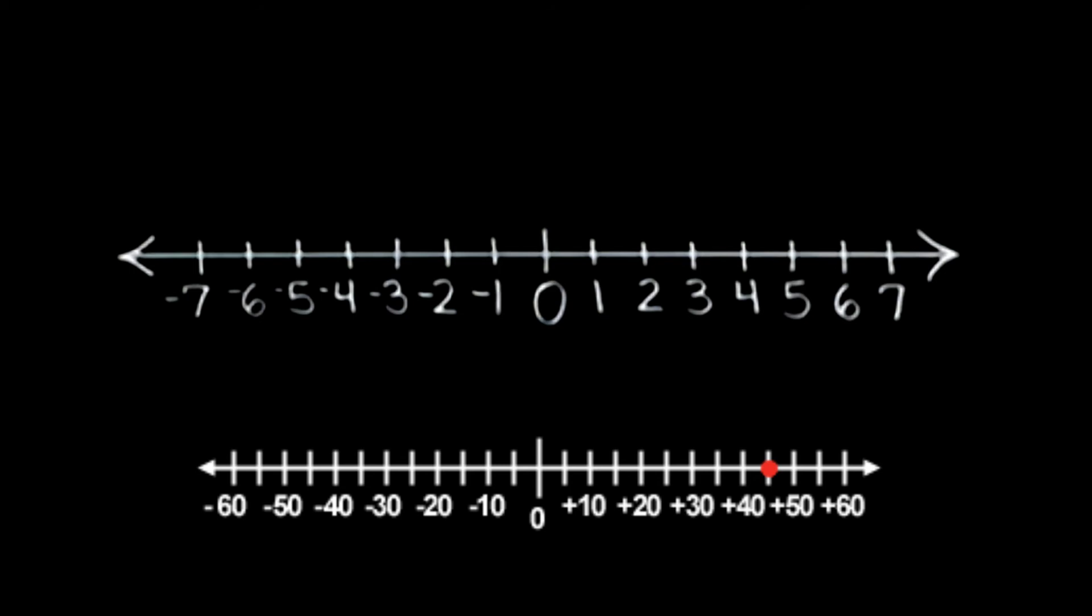Once we change the scale of our number line, just follow the steps like we did in our first example problem when we were graphing our two integers on the number line. We're going to do the same thing here, just plot a point at positive 45.